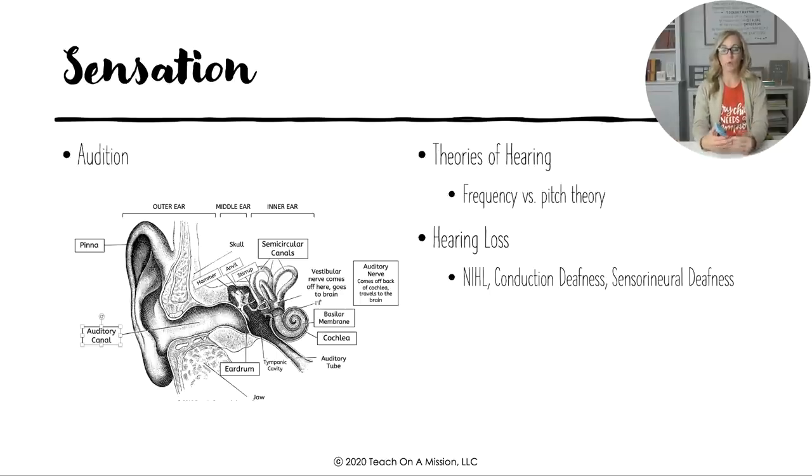Then there's audition or hearing. Making sure that you understand all parts of the ear, including the pinna, which is the part that you pierce. It's just a funnel to the auditory canal, which you clean out with a Q-tip. And then there's the eardrum that vibrates to send the message to the three bones of the middle ear. Then it goes to the semicircular canals and then to the cochlea where the basilar membrane is. And inside of that fluid-filled cochlea are the hair cells. The hair cells vibrate, which is where transduction occurs, and the information is sent to the auditory nerve.